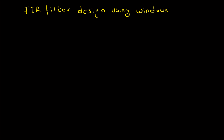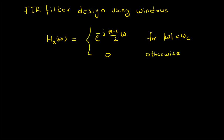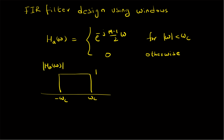We are going to look at a design of a symmetric low-pass filter with the following desired frequency response: h_a(ω) is equal to e^(−j(m−1)/2 · ω) for values of ω less than ω_c, and 0 otherwise. Basically, we are looking at a flat response of value 1 in the interval −ω_c to +ω_c, and 0 outside that interval. This is the magnitude |H(ω)|.